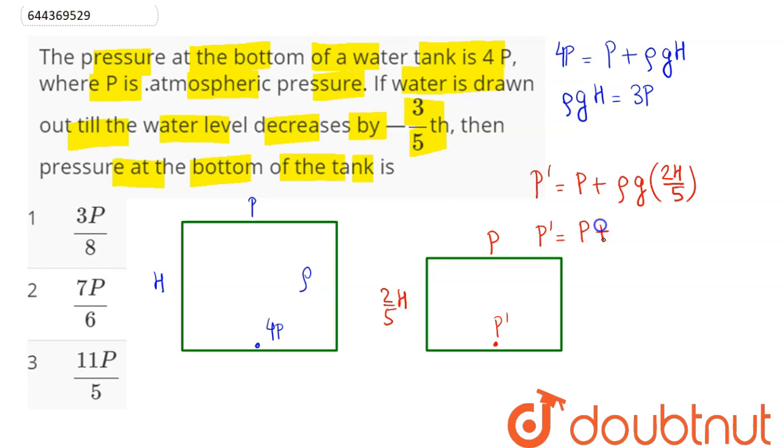So this P dash comes out to be P plus rho g H value, which we have as 3P. So this is 2/5 of rho g H. We can say P dash equals P plus 2/5 of 3P.